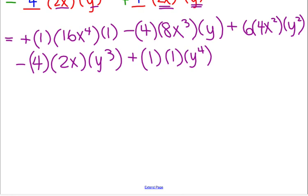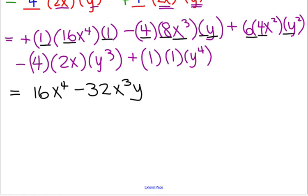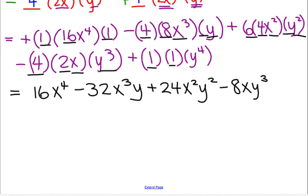So now we have one times sixteen times one. You always take your coefficients. And then it's x to the fourth. Negative four times eight times one is negative thirty-two. Now we have an x cubed and a y. Six times four times one is twenty-four x squared y squared. Last one. Negative four times two is negative eight x y cubed. Last one. One times one is one y to the fourth.